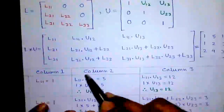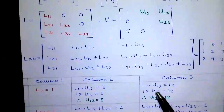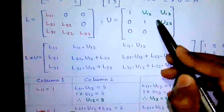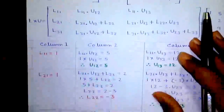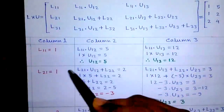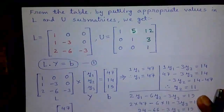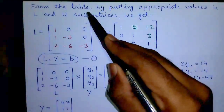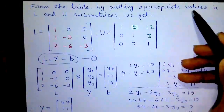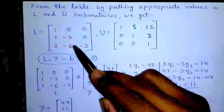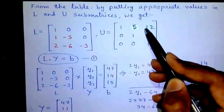By putting the values obtained from this table into L and U, you will get the actual L and U sub-matrices. For your convenience, L values are written in red and U values in green. From the table, by putting appropriate values, we get the final matrices L and U.